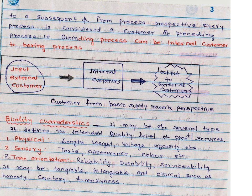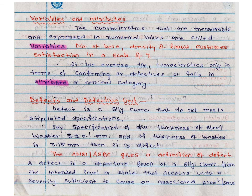Characteristics may also be tangible, intangible, or ethical, such as honesty, courtesy, and friendliness. Now we come to variables and attributes. Variables are those parameters which we can measure physically — characteristics that are measurable and expressed in numerical values are called variables.